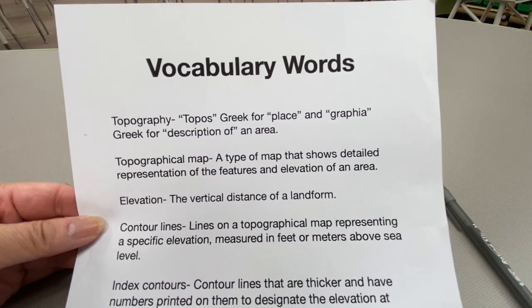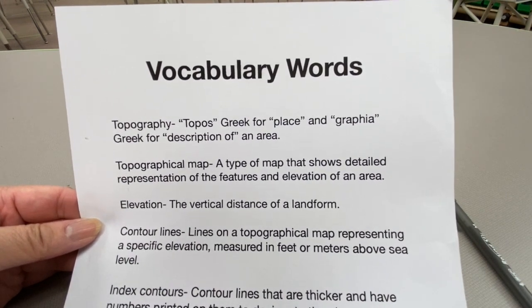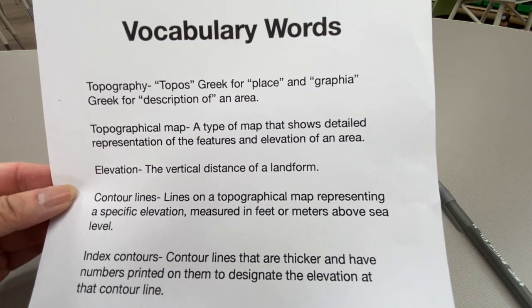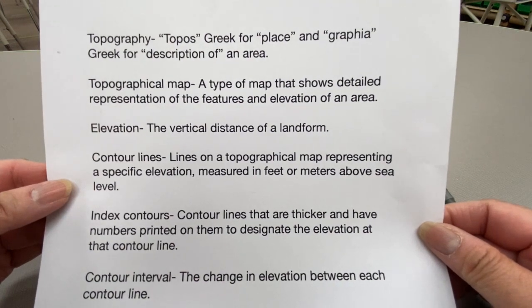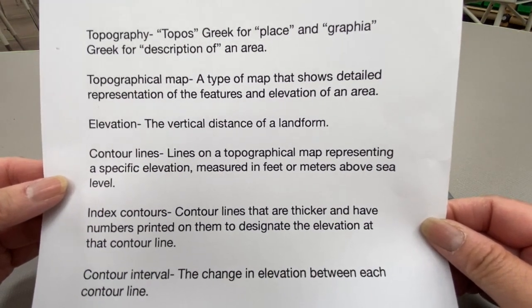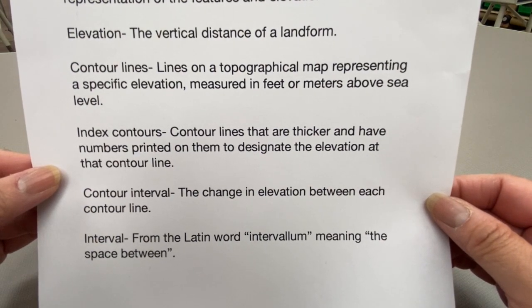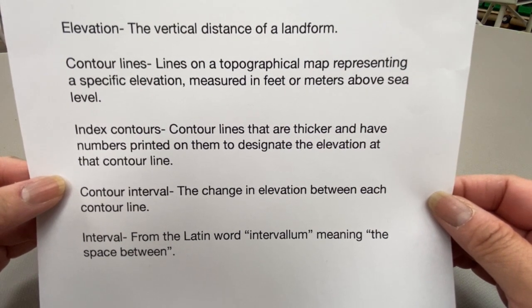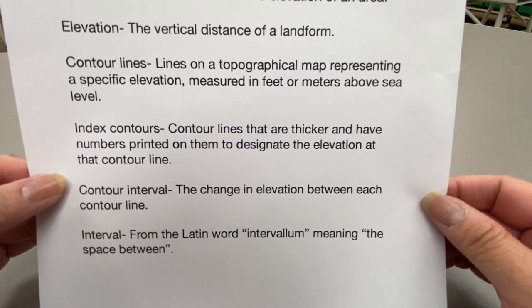Let's go over our vocabulary words for this investigation. Topography comes from the Greek word topos for place and graphia for description of. Topography describes the physical features of an area of land. A topographical map is a type of map that shows a detailed representation of the features and elevation of an area. Elevation: the vertical distance of a landform. Contour lines: lines on a topographical map representing a specific elevation measured in feet or meters above sea level. Index contours: contour lines that are thicker and have numbers printed on them to designate the elevation. Contour interval: the change in elevation between each contour line. Interval comes from the Latin word intervalum, meaning the space between — so the contour interval is the space in between each contour line.